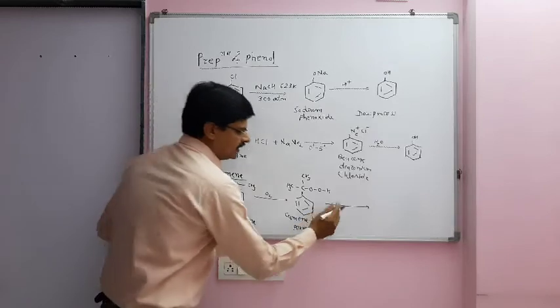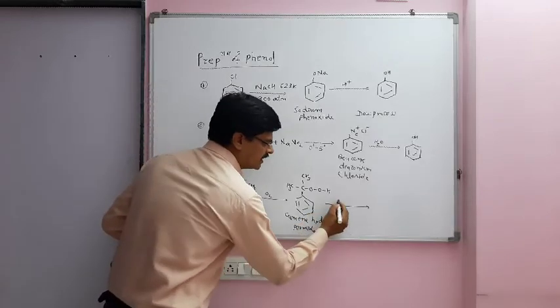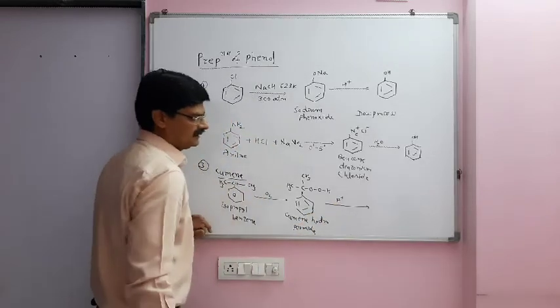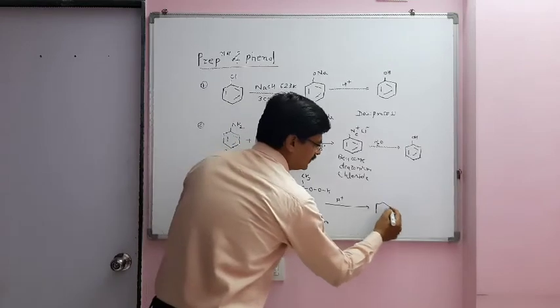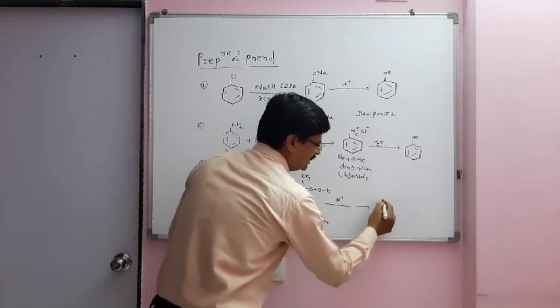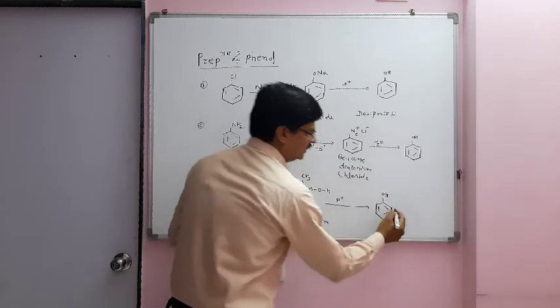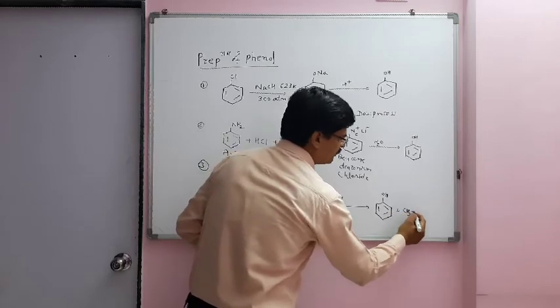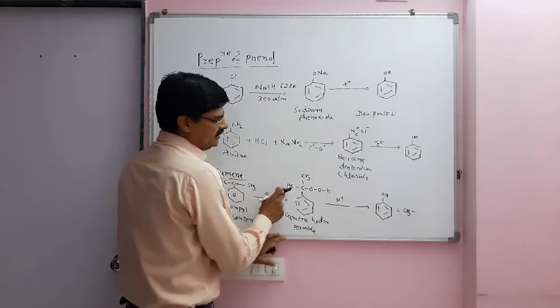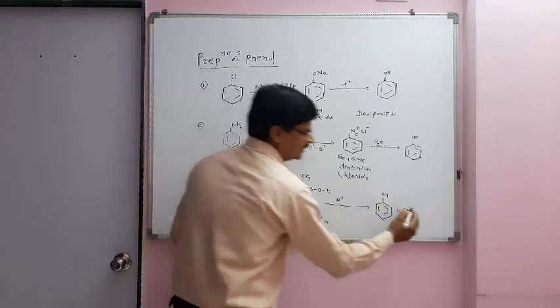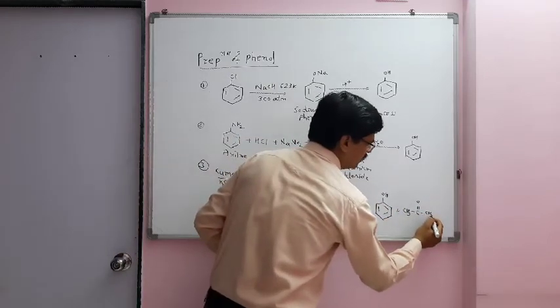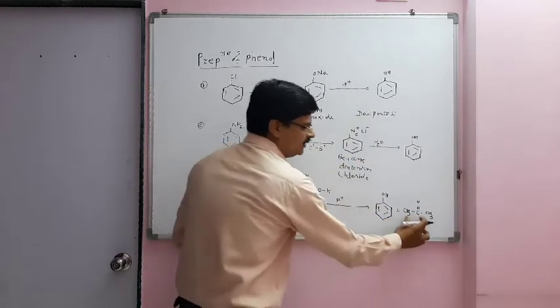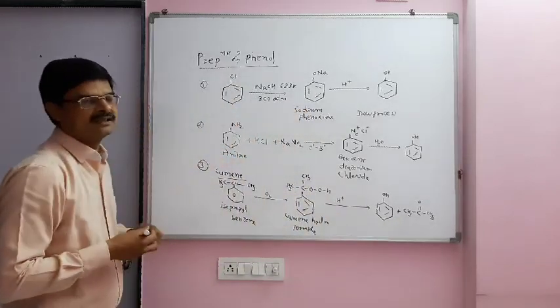Cumene hydroperoxide, when treated with H+, gives phenol, and the byproduct formed is CH3COCH3, which is acetone or propan-2-one. This is also produced on a large scale.